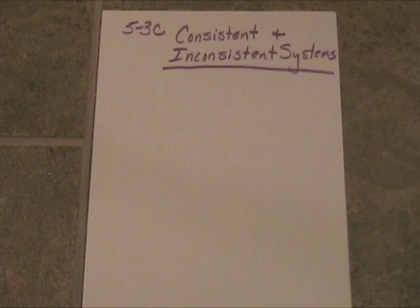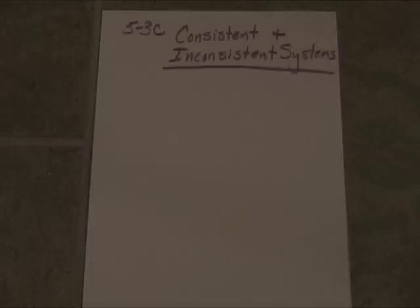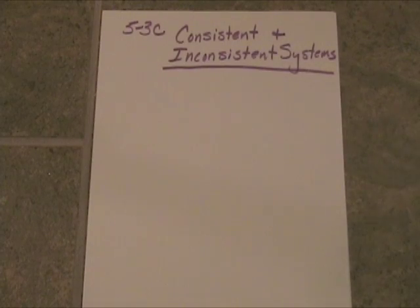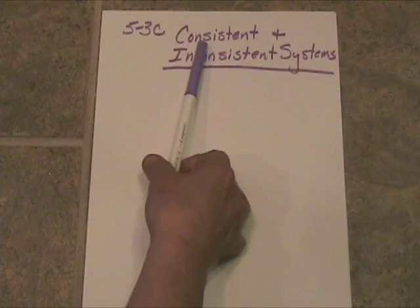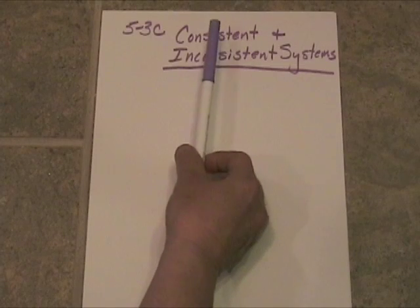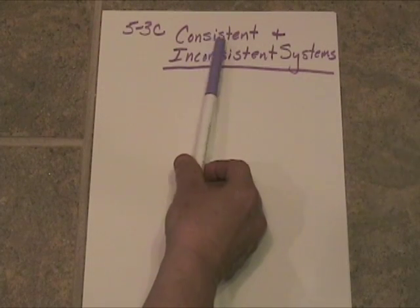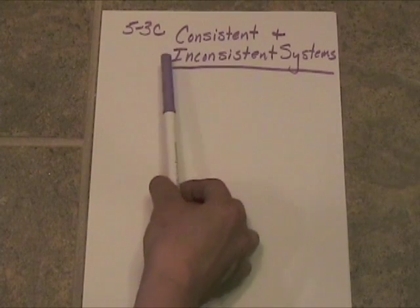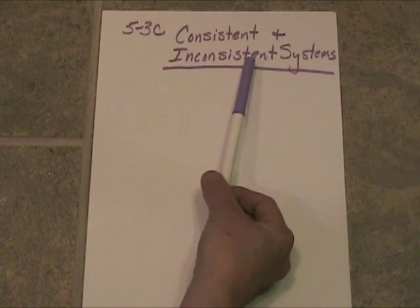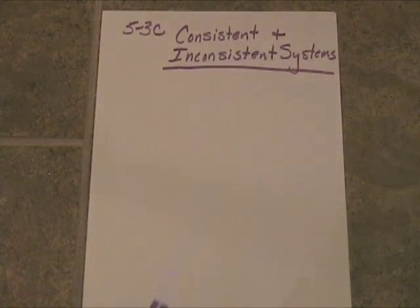Now, we have seen that sometimes there can be one answer if we have a linear system and it's just crossing in one line. Sometimes there can be two answers, sometimes there can be infinite answers, and sometimes there can be absolutely no answers whatsoever to the system. Now, if you have a consistent system, the word consistent means there will be an answer or more. Inconsistent systems do not have answers. So let's take a look at examples of each.